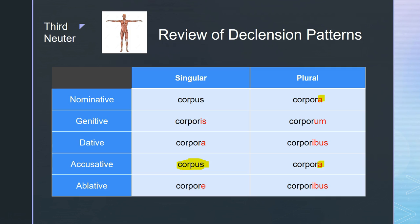The third declension has a neuter variation and it follows the neuter rule — the nominative and accusative must match. So the accusative is whatever the nominative was. This word, corpus corporis, is neuter. When I want to use corpus in the accusative, I just use whatever the nominative was, which is corpus — I don't have to remember any ending at all, I just repeat the nominative. The plural still follows the neuter rule where the nominative and accusative plural end in A. The neuter rule works for all three neuter patterns. Note: there is a typo in the slide — the dative singular should be I, it should be corporei. If you're using this to study, make sure you note corporei in that dative singular slot.